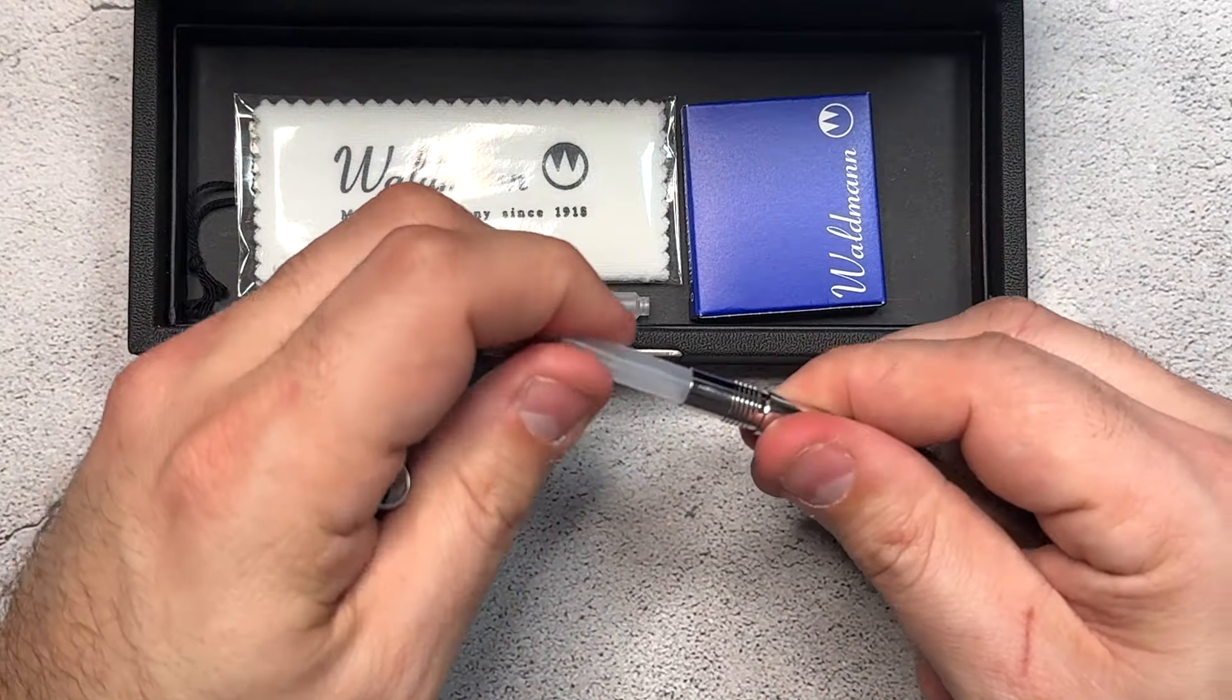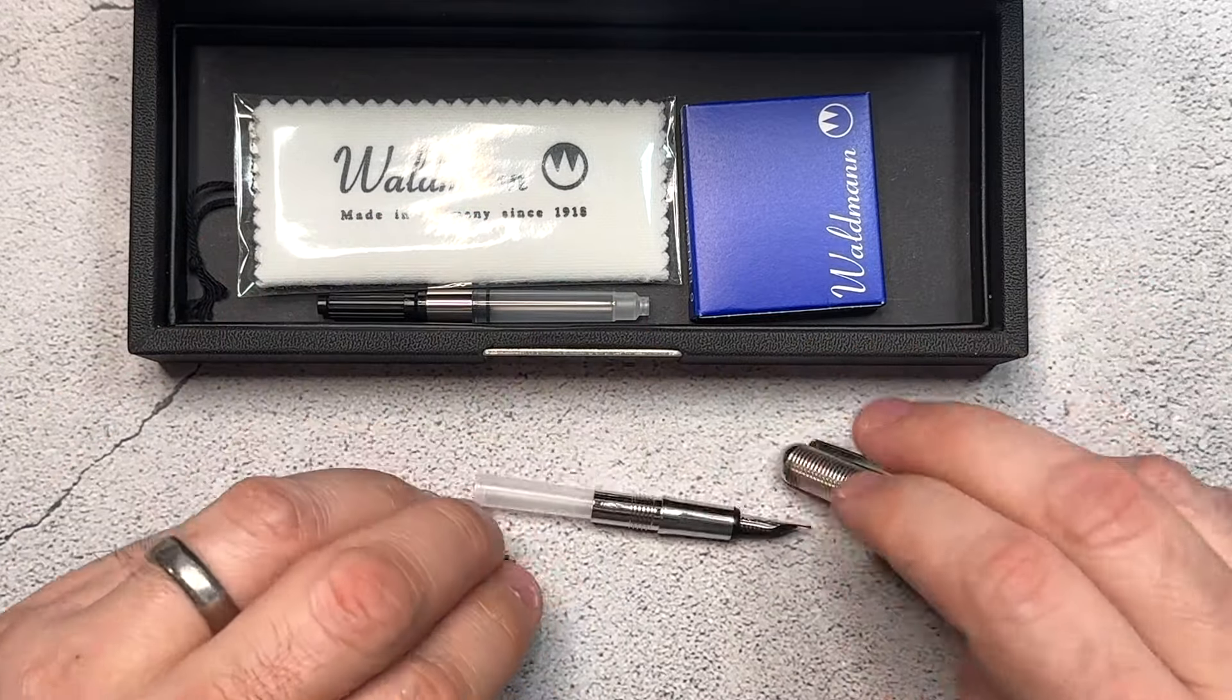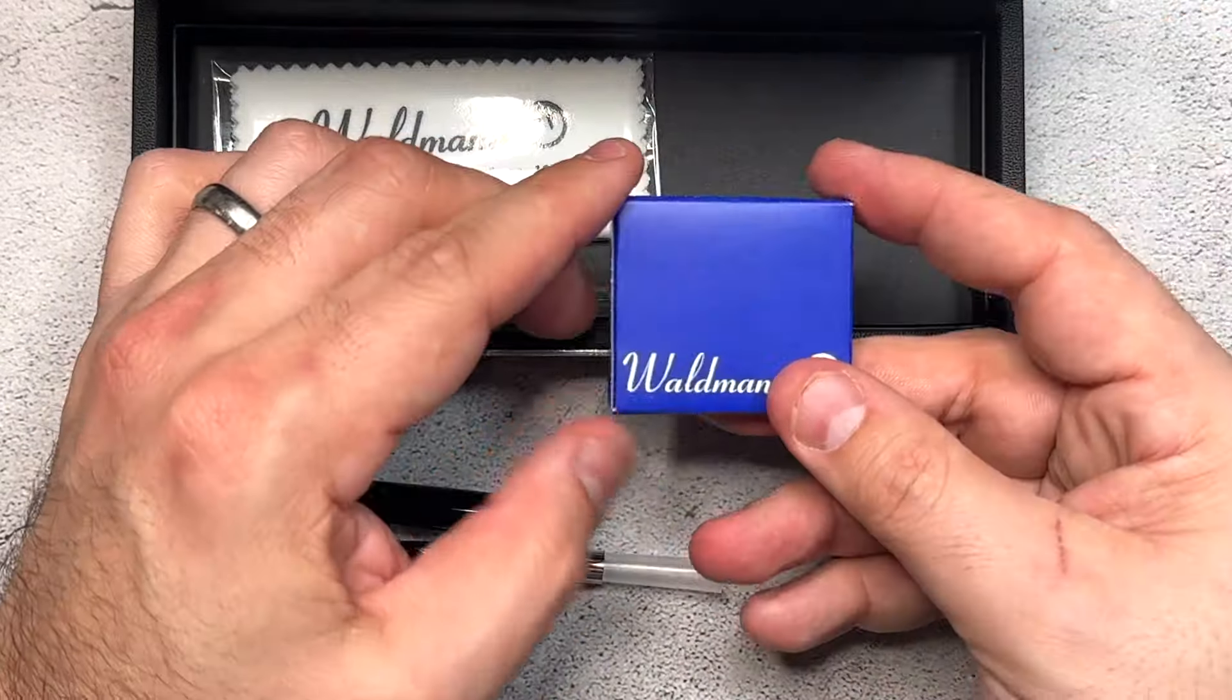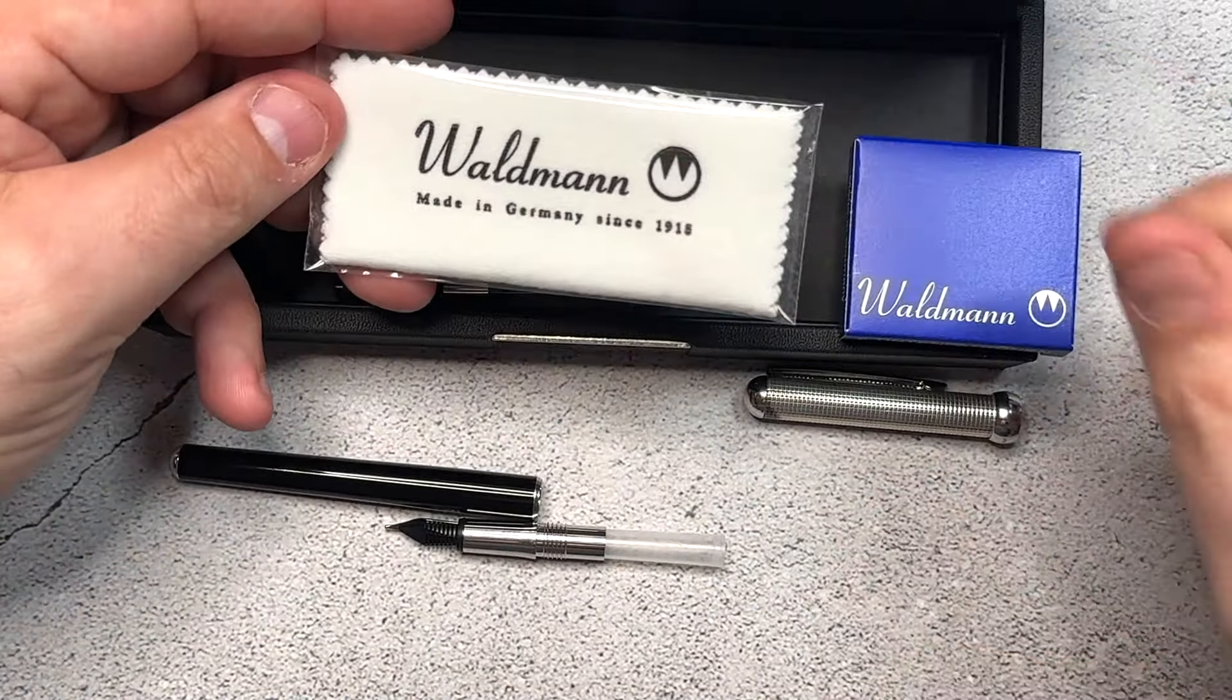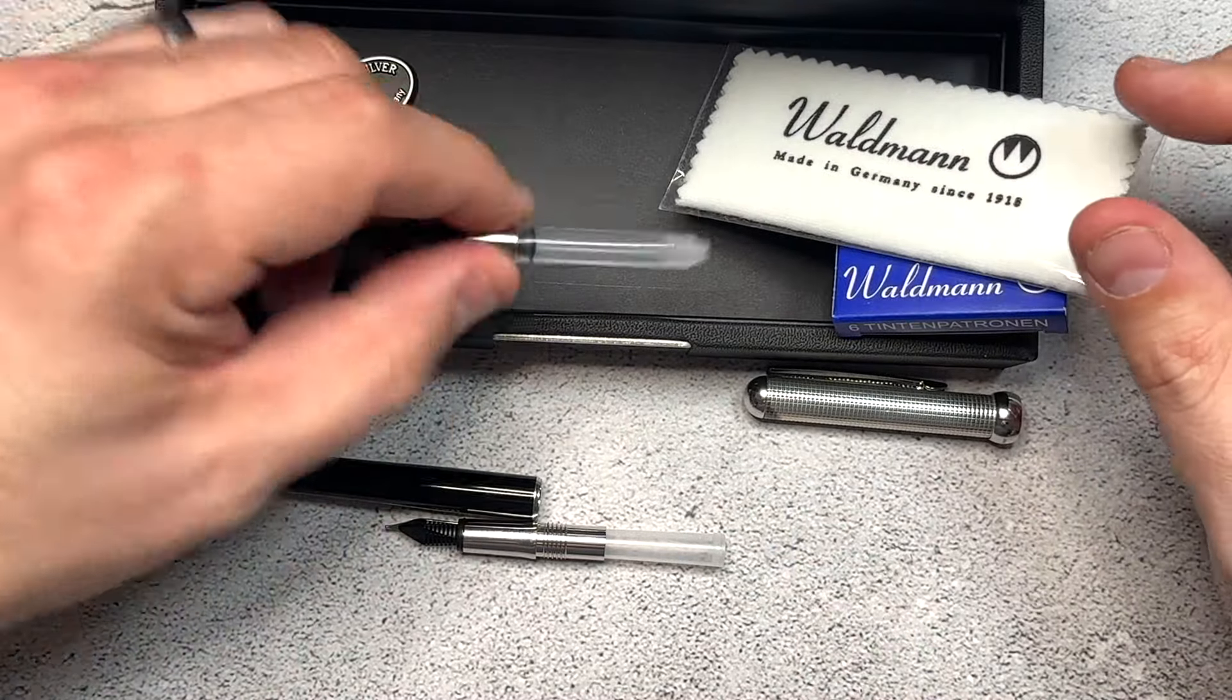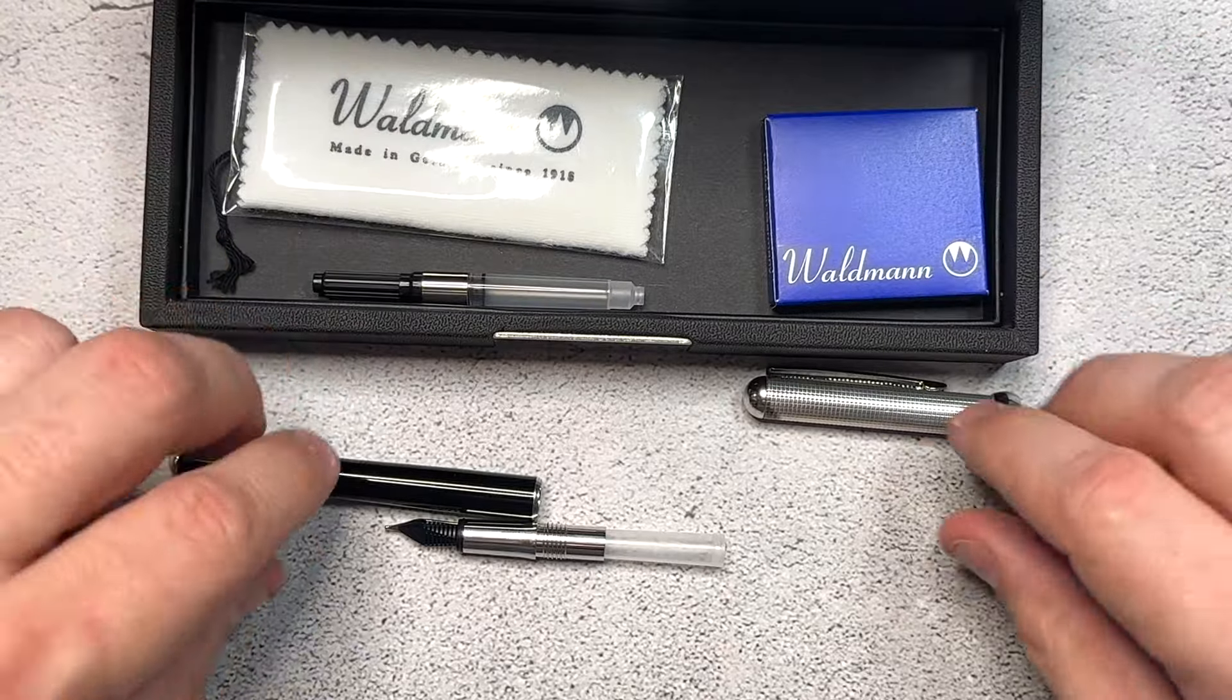The pen itself comes ready to take different cartridges. They have just an empty one inside of here. They also give you cartridges. They give you a wonderful cloth that you can wipe your pen off with since it can get fingerprints on it. But you also get a converter in here as well to use with your pen. So you really get everything with these.